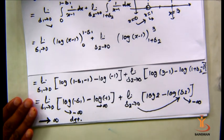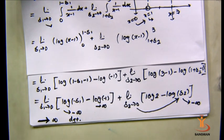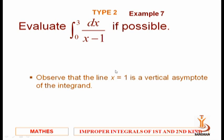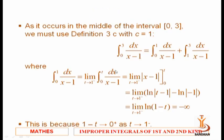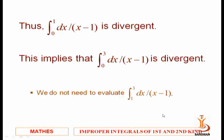Geometrically this is shown in the PPT. Importantly: one might naively write ∫₀³ 1/(x-1) dx = [log|x-1|]₀³ = log 2, but this is wrong. Since at x=1 the function is not defined, you cannot directly evaluate the integral — you must first recognize it as an improper integral and evaluate using limits.